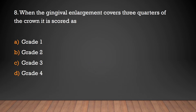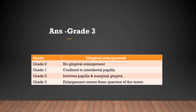When gingival enlargement covers three quarters of the crown, it is scored as grade 1, 2, 3, or 4? Answer: grade 3. In grade 0 there is no gingival enlargement; grade 1 is confined to interdental papilla; grade 2 involves papilla and marginal gingiva; grade 3 covers three quarters of the crown.